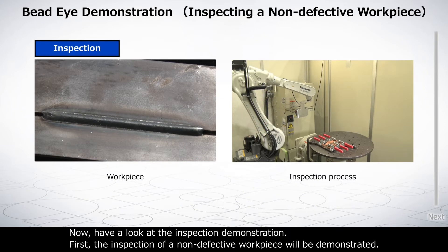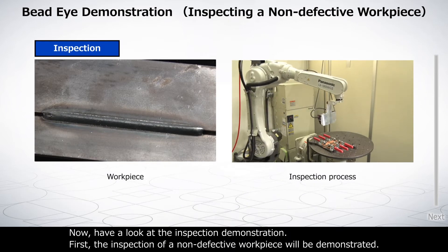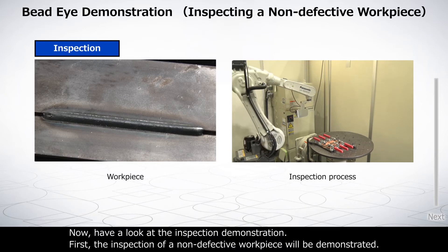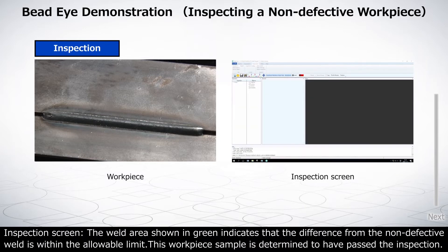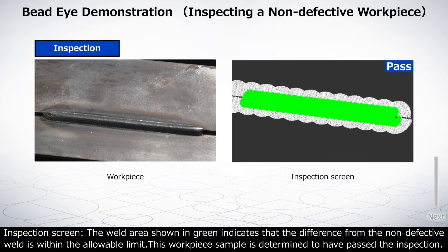Now have a look at the inspection demonstration. First, the inspection of a non-defective workpiece will be demonstrated. The weld area shown in green indicates that the difference from the non-defective weld is within the allowable limit. This workpiece sample is determined to have passed the inspection.